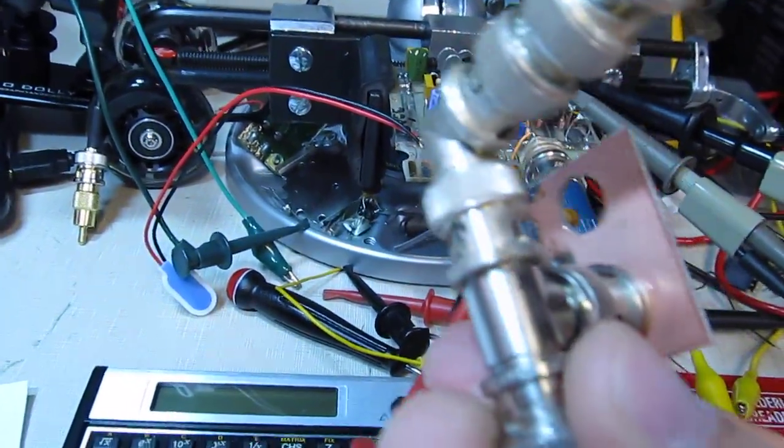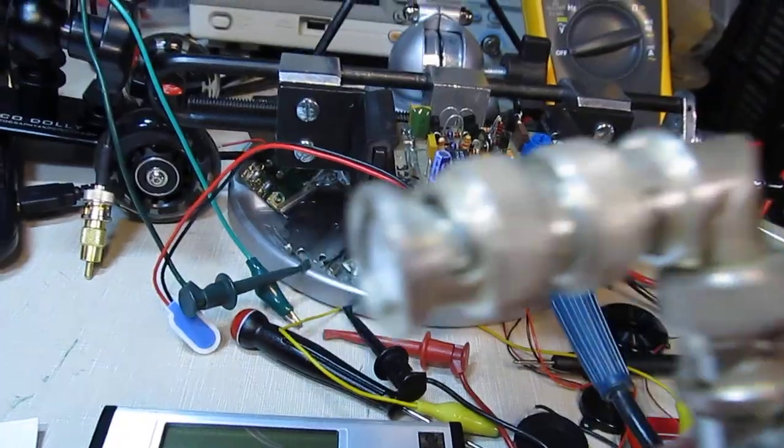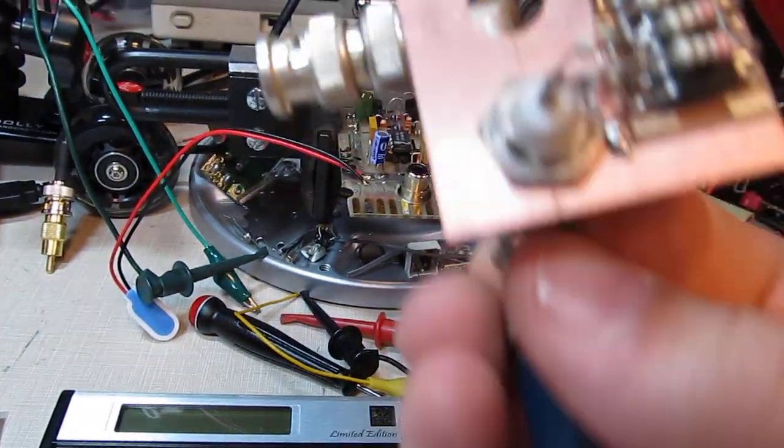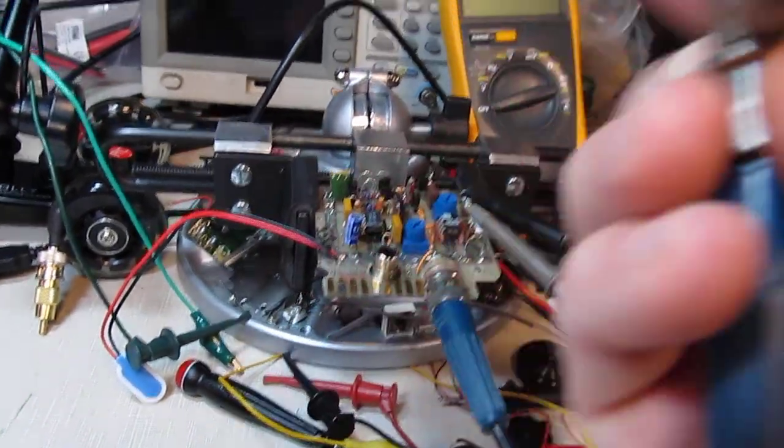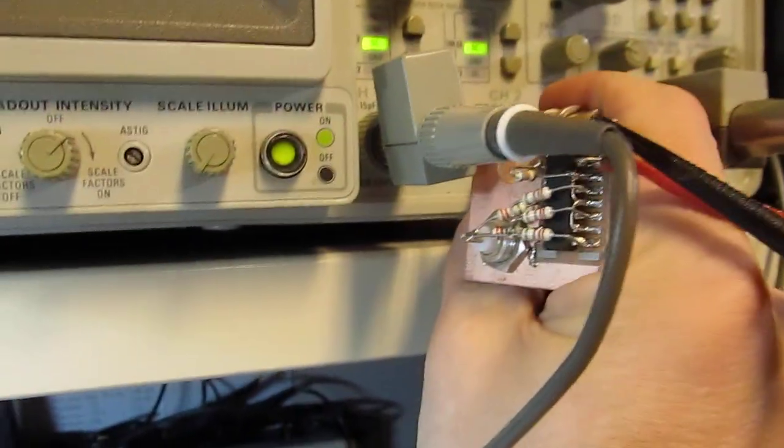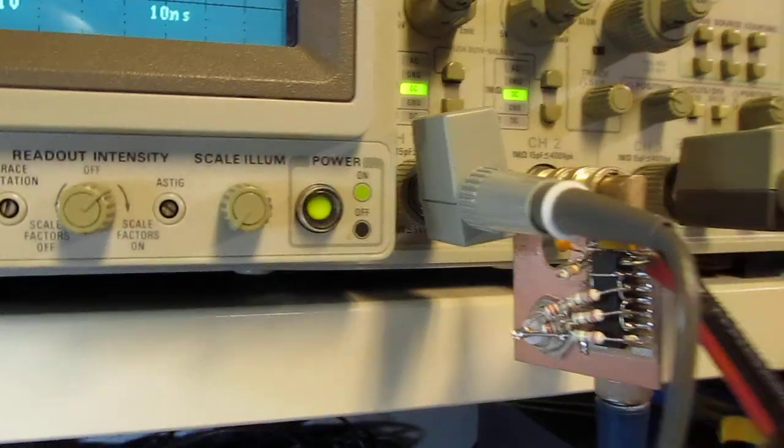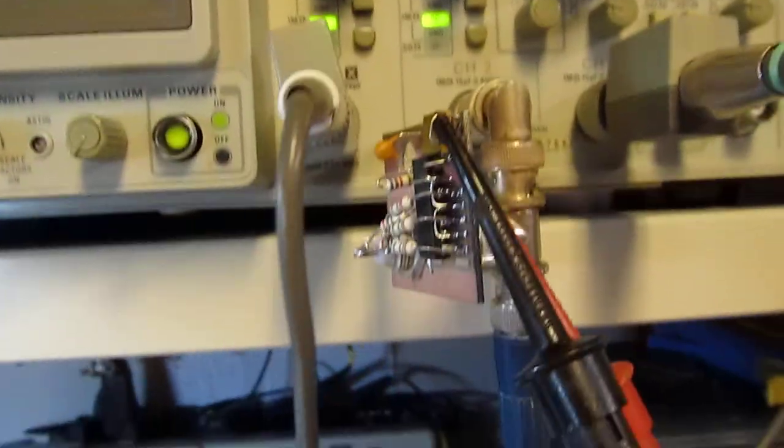We connect this end into the scope, and now the coax is just connected to the far end. If I bring this over here and connect this up, now that's connected up to the scope.